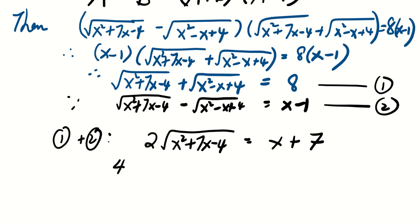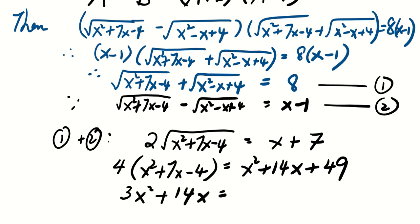Finally, we can square both sides: x squared plus 7x minus 4 equals to x squared plus 14x plus 49, which gives us 3x squared plus 14x equals to 49 plus 16, and that is equal to 65.